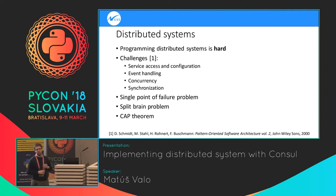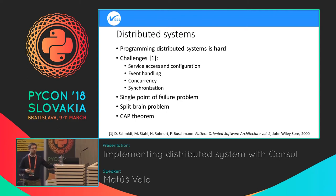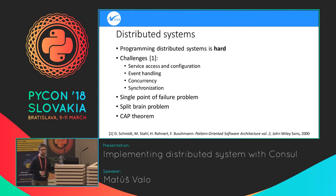The second issue is event handling. A lot of the time when working with distributed systems, some events occur, and you need to react to these events when something happens. It is very hard to propagate the event to all nodes in the system so that the system can react to it.